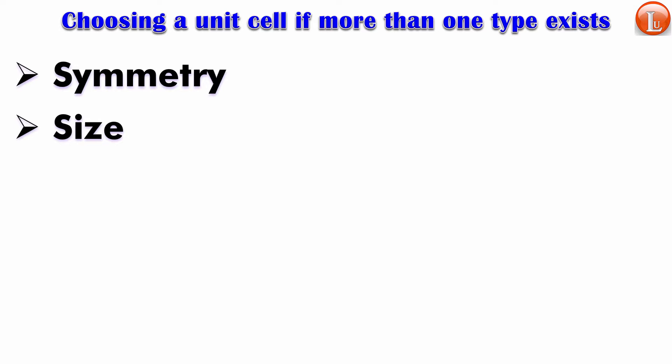Let me give you an example. Say you have an arrangement of atoms, ions, or molecules and you're able to find two unit cells in this arrangement. Now you don't just jump and say let's go for the smallest repeating unit. Even though when we discussed unit cells we did say the smallest repeating unit, as we go deeper into the selection of unit cells, we need to look at symmetry first and then the size.